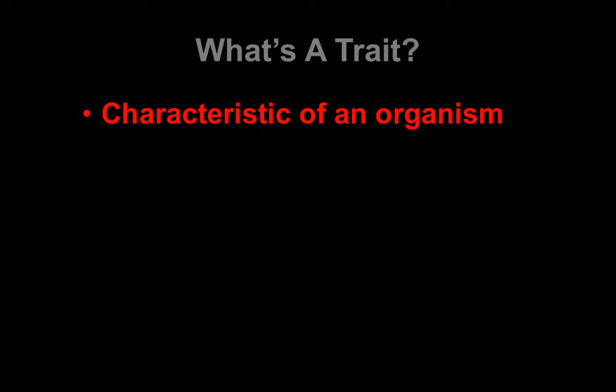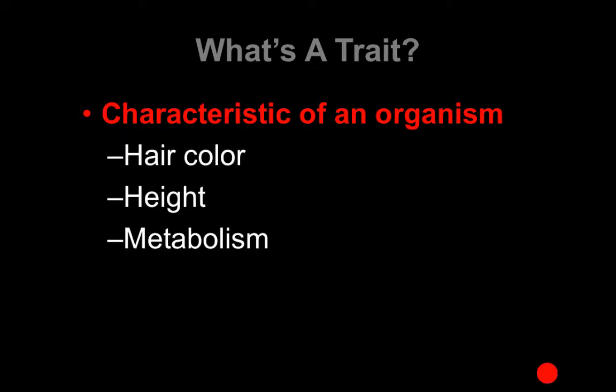So now let's look at what a trait is. A trait is a characteristic of an organism — things like hair color, height, metabolism, all kinds of things. Any characteristic is a trait, and these traits are created by genes.